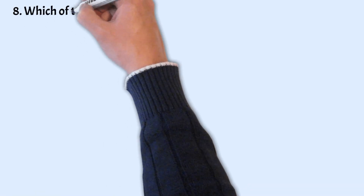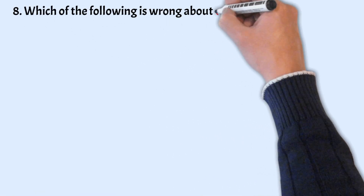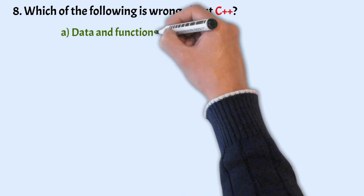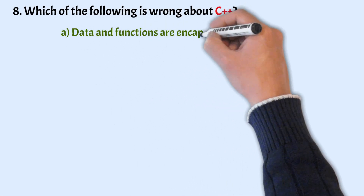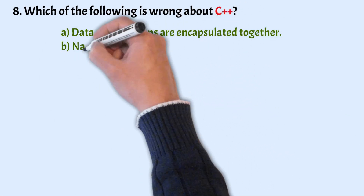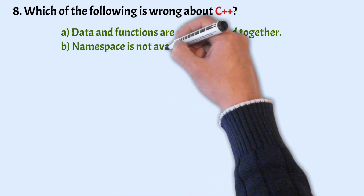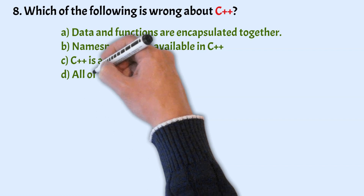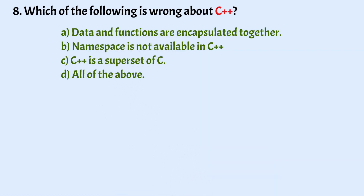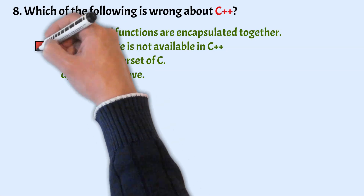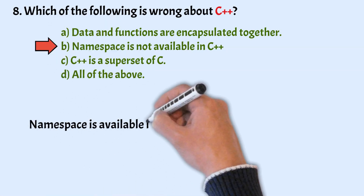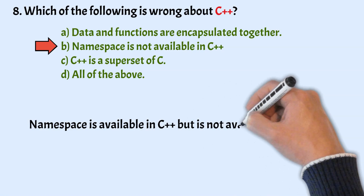Which of the following is wrong about C++? The options are: data and functions are encapsulated together; namespace is not available in C++; C++ is a superset of C; and all of the above. The correct answer is option B — the statement that namespace is not available in C++ is wrong. Namespace is available in C++, but is not available in C.